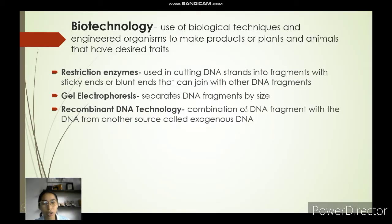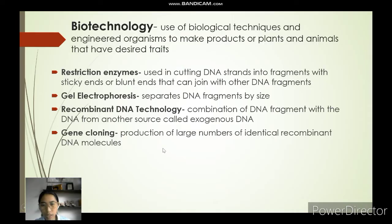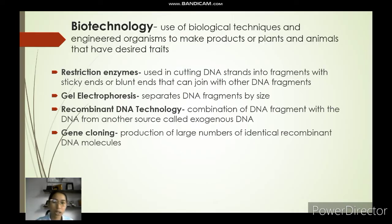Next is recombinant DNA technology, which is a combination of a DNA fragment with a DNA from another source, which we call exogenous DNA — a DNA fragment from one organism combined with a DNA fragment from another organism. Then there is gene cloning, which is the production of a large number of identical recombinant DNA molecules. That recombinant DNA is multiplied, and that is called gene cloning.